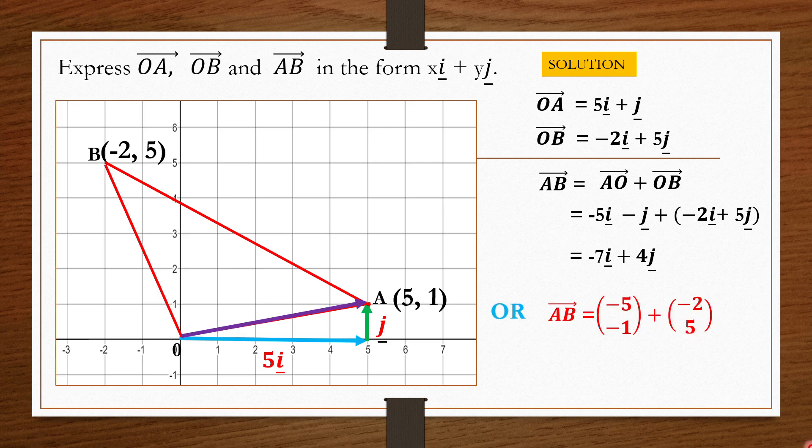If the question doesn't specify the form, you can also use column form. Convert AO and OB to column form and add them to get the resultant vector AB.